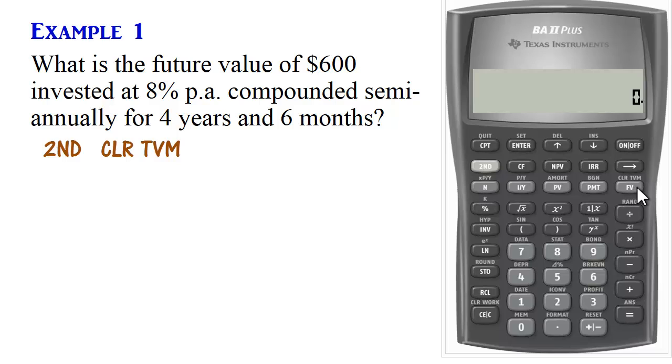Next, we need to set the compounding period for a year. So we go to 2nd, P/Y, and in this case, it's compounded semi-annually, so we set P/Y to 2.